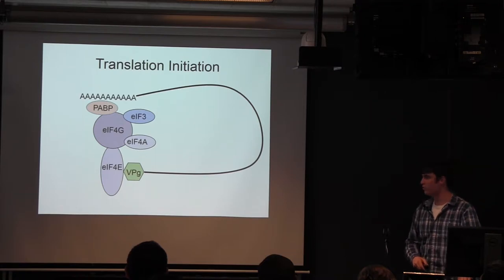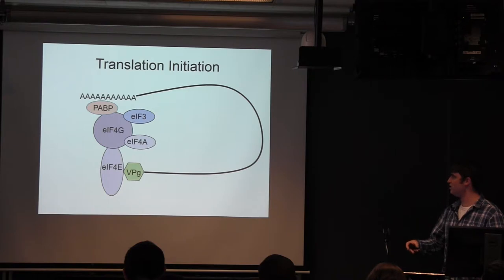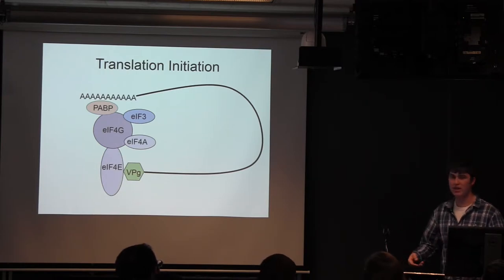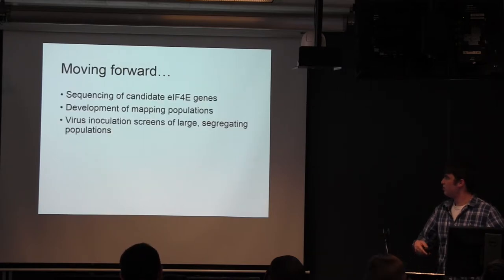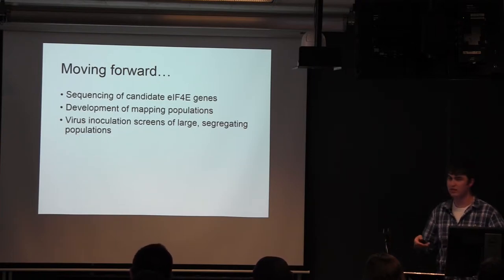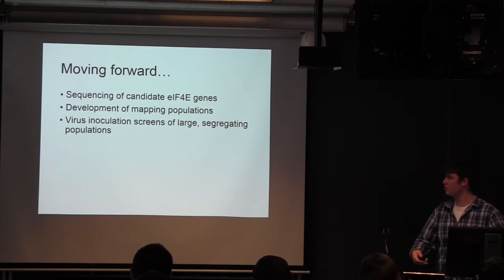EIF4E is part of the translation initiation complex and it binds directly to this genome-associated viral protein that is acting as the 5' cap for virus RNA. If there is a mutation in this protein and it can't bind properly, then this whole complex doesn't form, translation doesn't happen, and the virus can't spread. Moving forward, I'm looking for candidate genes from other transcriptomic work identified in cucurbita species, sequencing those genes, looking for any polymorphism that could lead to mutations inhibiting this binding, and also working to develop more mapping populations and doing more screening.